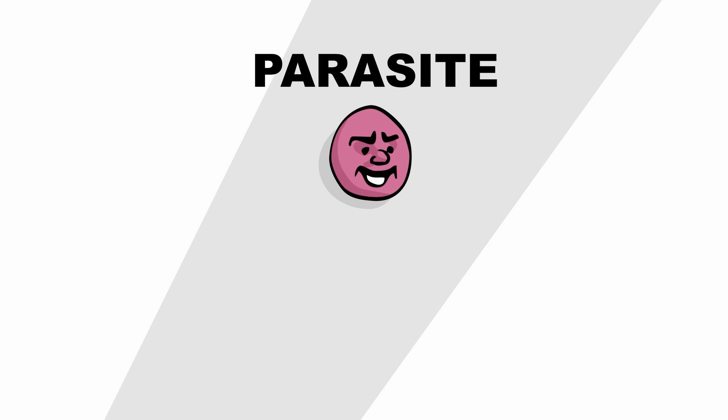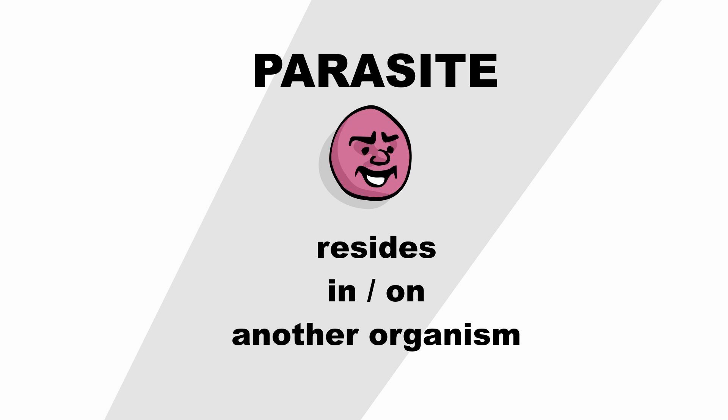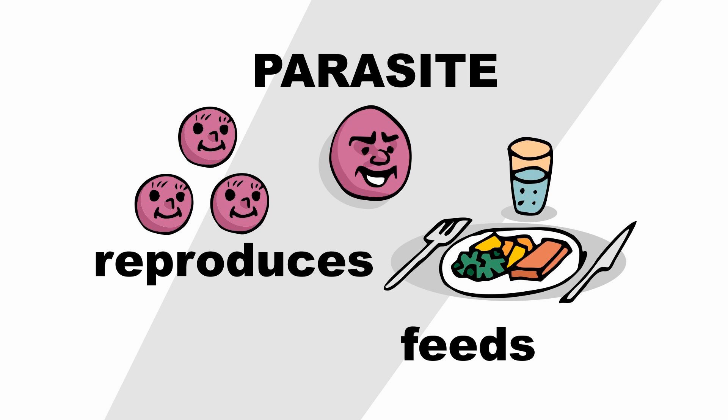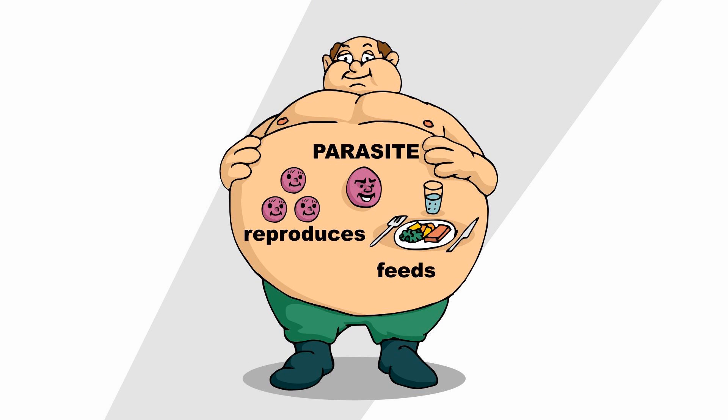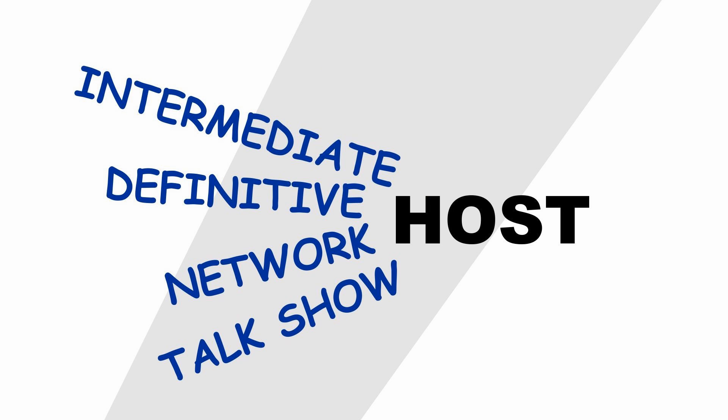A parasite, temporarily or permanently, resides in or on another organism in order to feed or multiply. This organism is called the host. Adding defining adjectives to it is only useful if, with regard to the parasite, there is more than one kind of host.